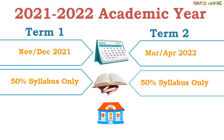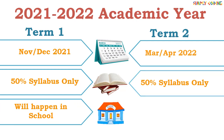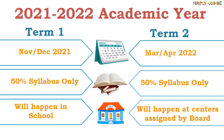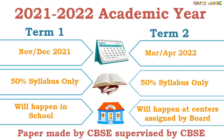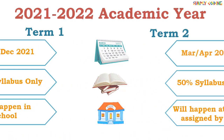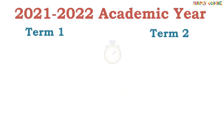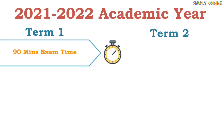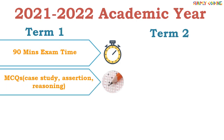The term 1 exam will happen in your school, but the term 2 exam will happen at centres assigned by the board, which is the regular normal scenario. In both cases, the paper will be made by CBSE and supervised by CBSE. The duration of the term 1 test will be 90 minutes and it will have only MCQ questions. These questions can be case-study based or assertion-reasoning type.